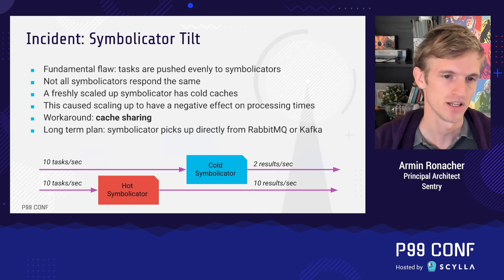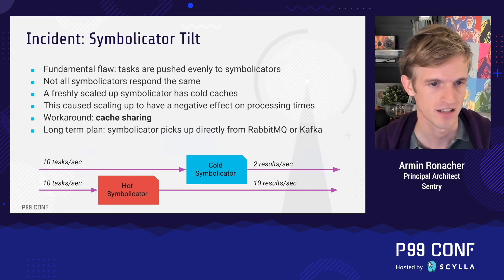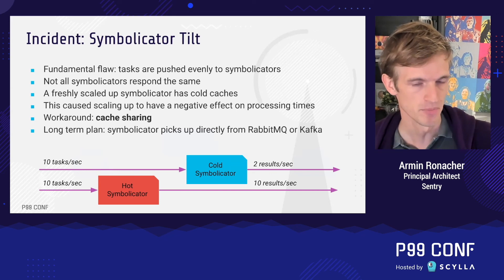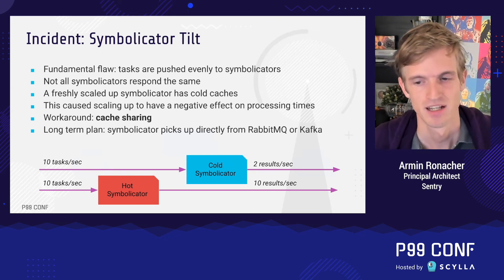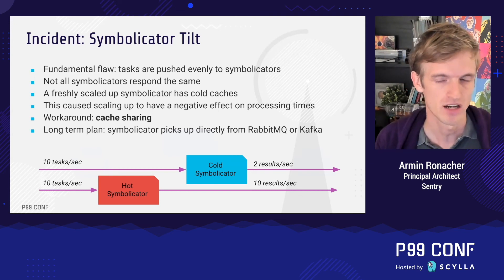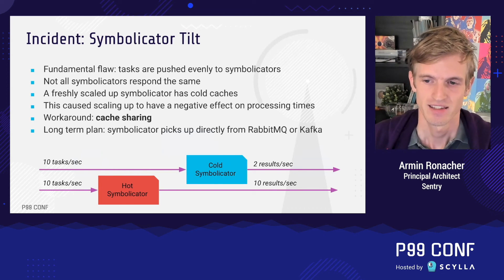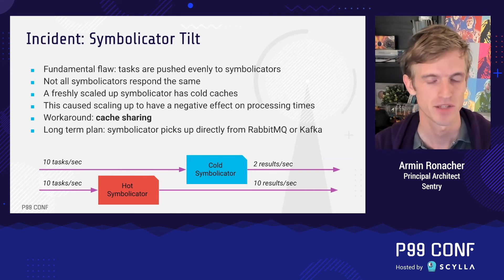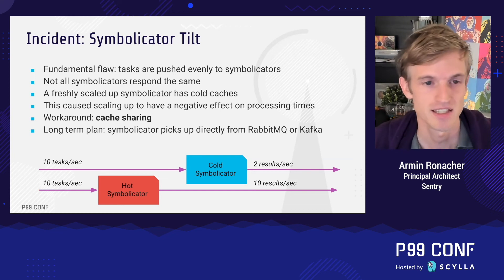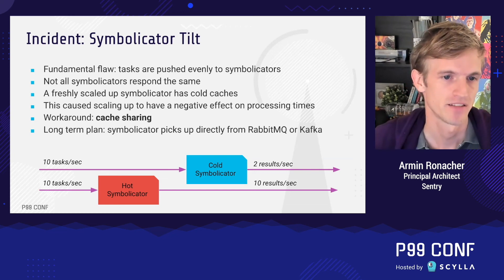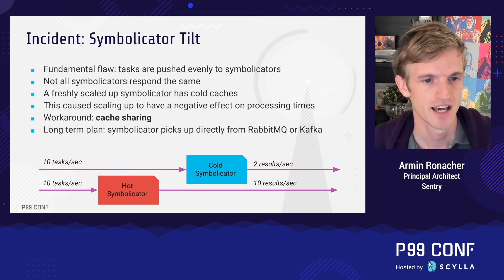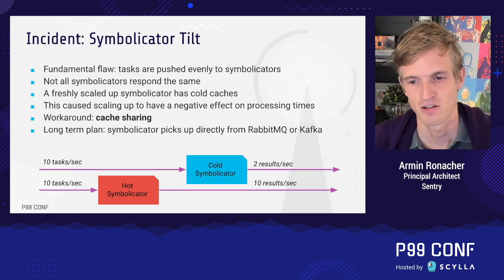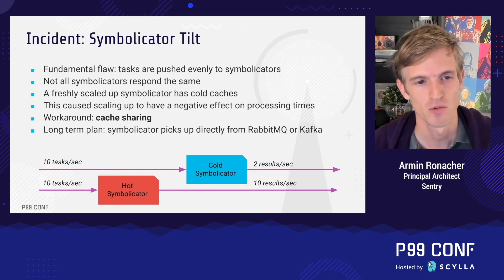Because the load balancer outside the Symbolicators doesn't know each instance's cache state, it distributes requests evenly. A cold Symbolicator receiving 10 tasks per second but only completing 2 would accumulate a backlog, eventually fall over, and enter a downward spiral. Our solution was active cache sharing: when a new Symbolicator comes up, it pre-warms its cache from other Symbolicators via a shared GCP bucket, so the cold start problem is now much less of an issue.